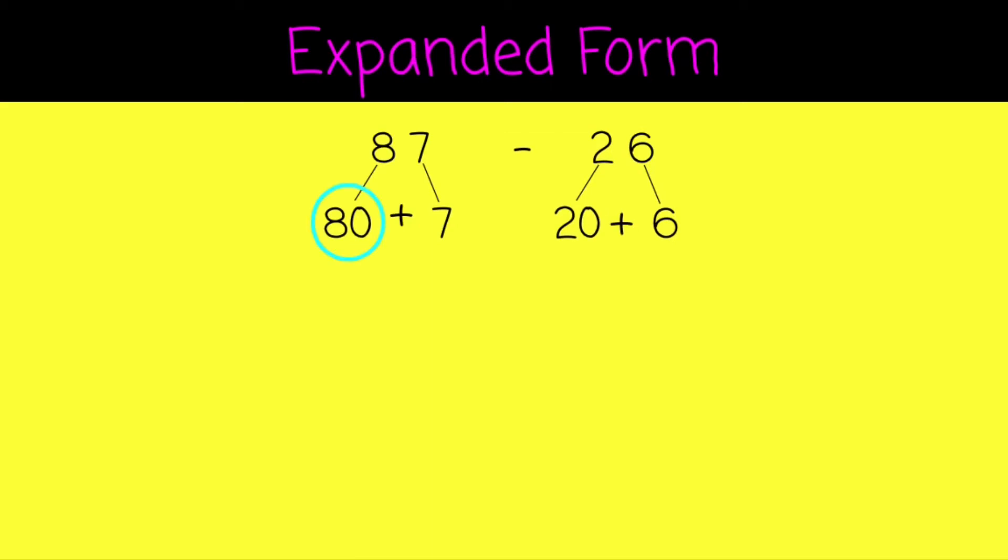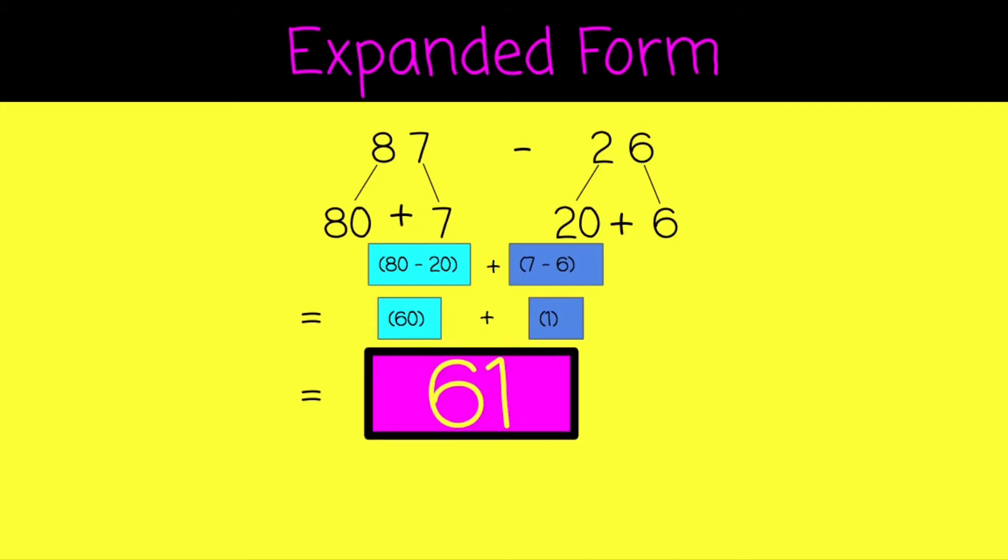That 2 represents 20 and that 6 is still 6. Let's subtract our tens. 80 take away 20, and 7 take away 6. That leaves us with 60 and 1 for a final difference of 61.